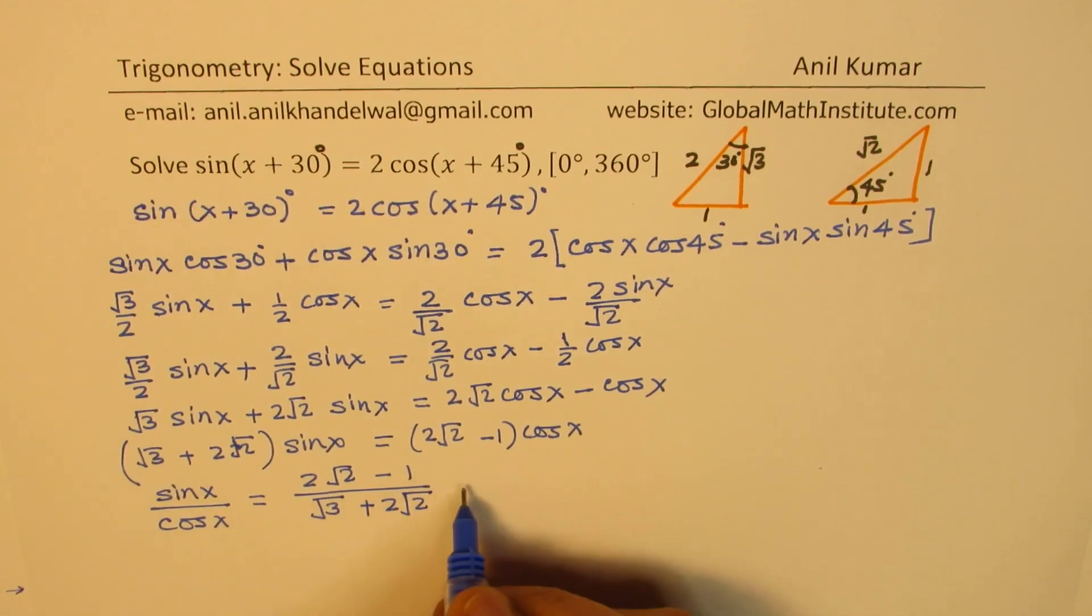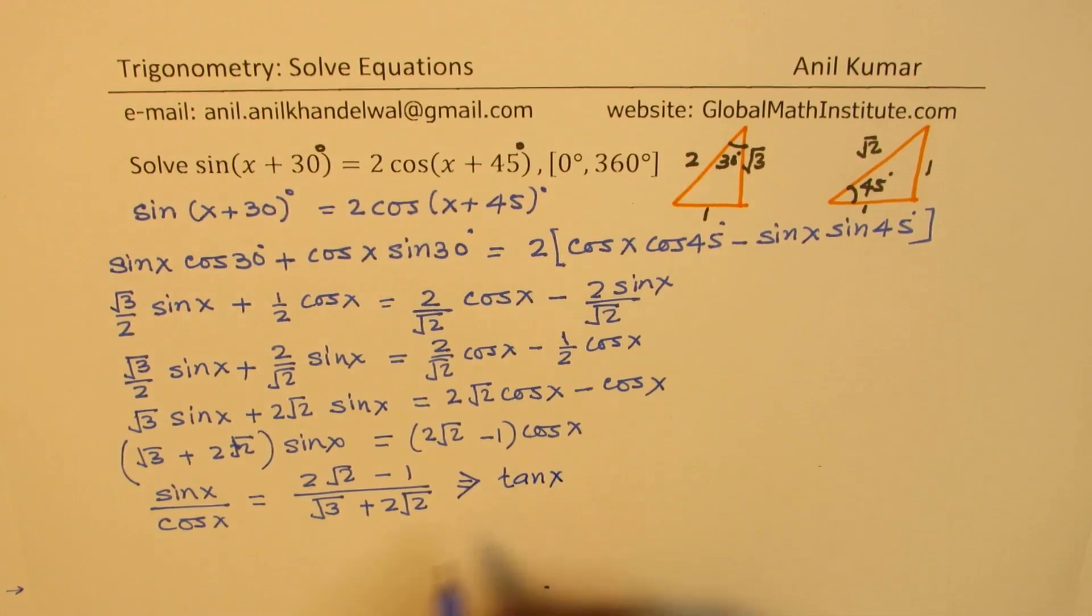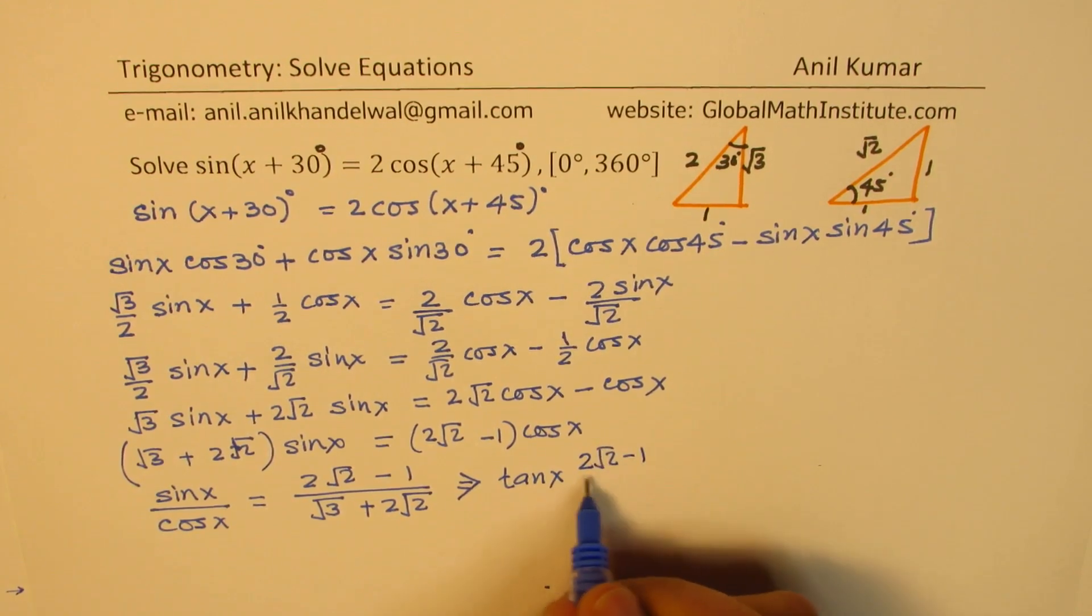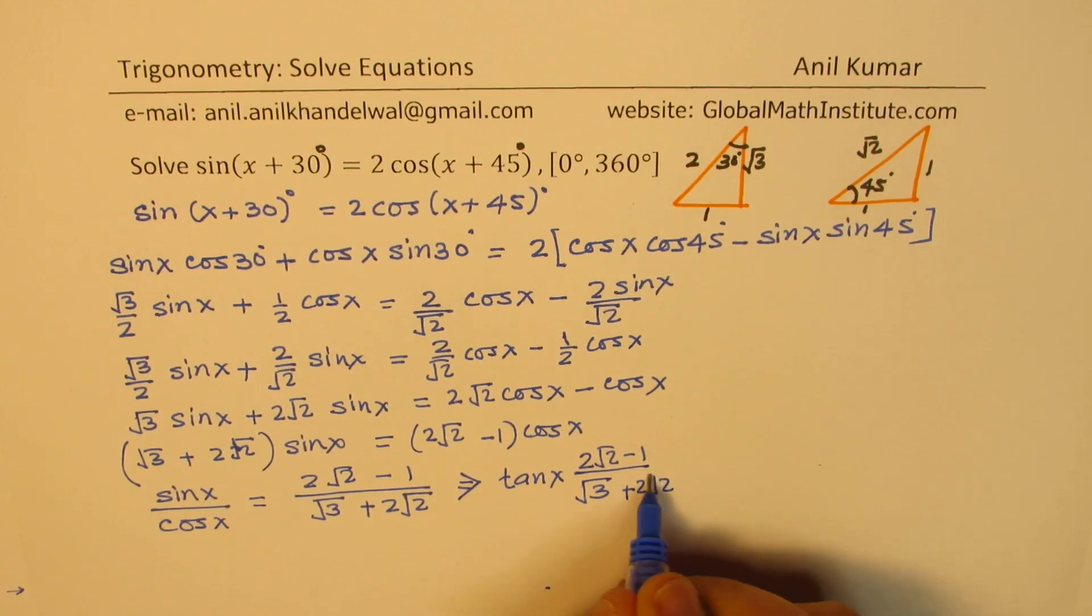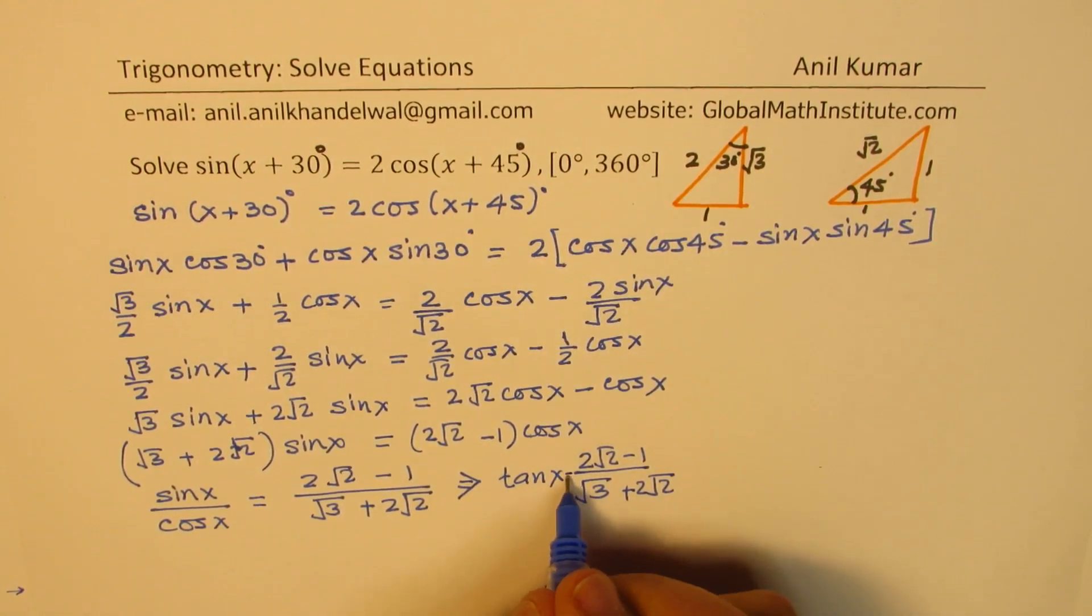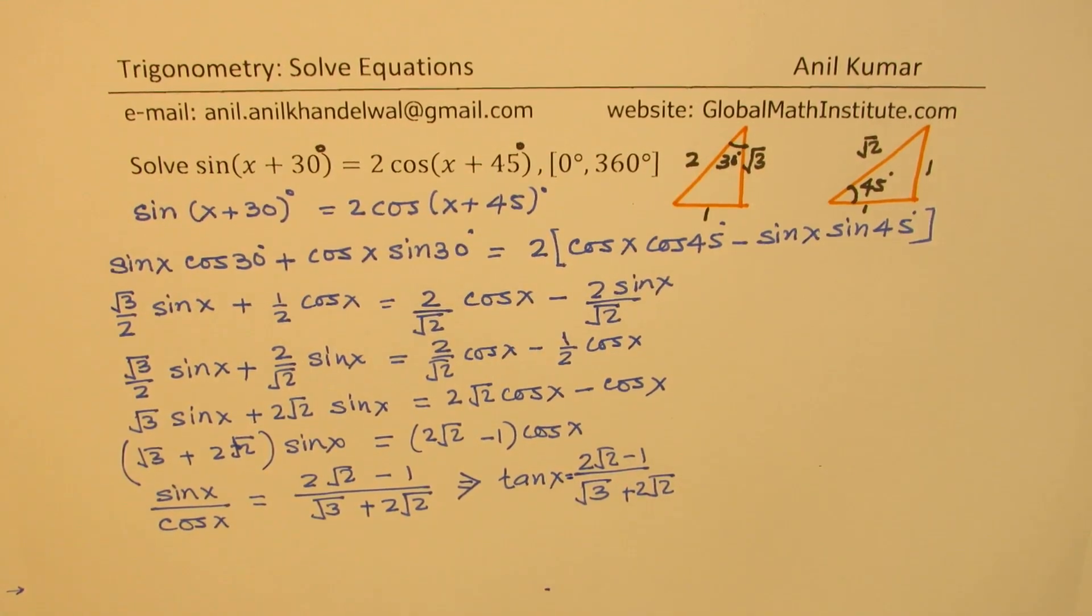So that gives you tan x. Sin x over cos x equals to tan x equals to (2√2 - 1)/(√3 + 2√2). So tan x equals to some value. Perfect.